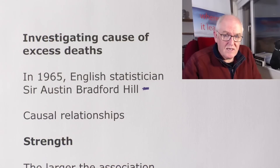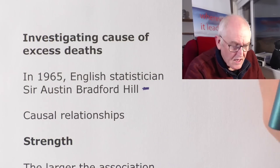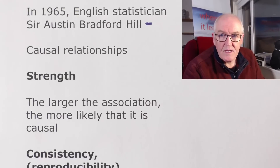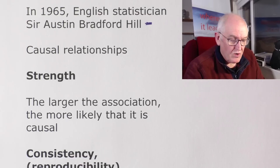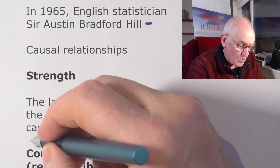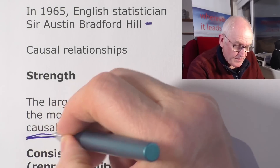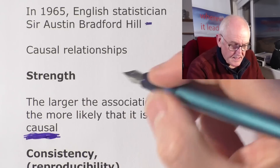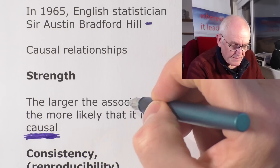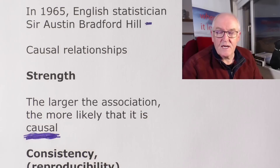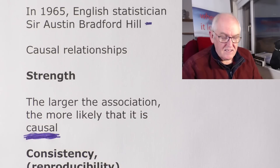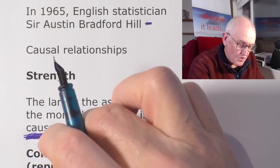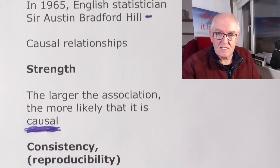This is how powerful this tool is, and we could use it now — it's a standard tool. It looks for the strength of the association. The larger the association, the more likely it is causal. So if something is causing these excess deaths and there's a large correlation, then it's likely that the relationship is causal between whatever the cause is and the result, which is the excess deaths.